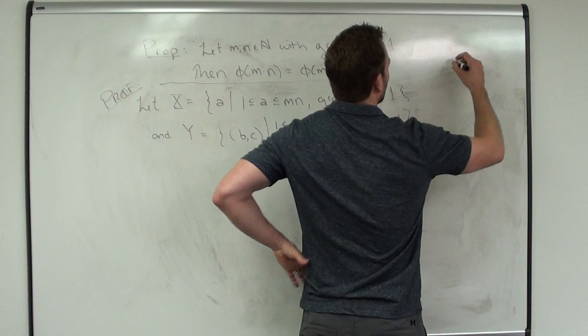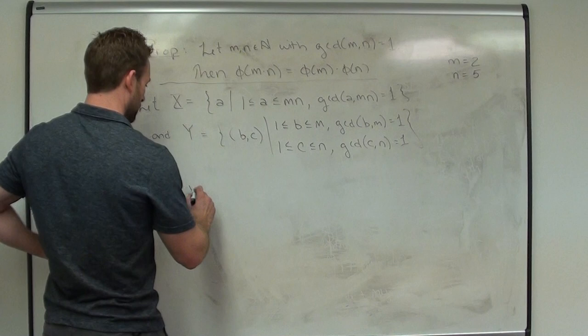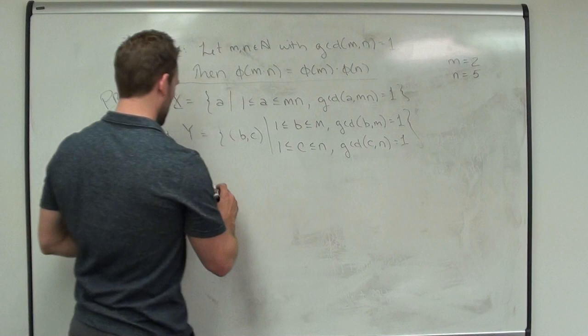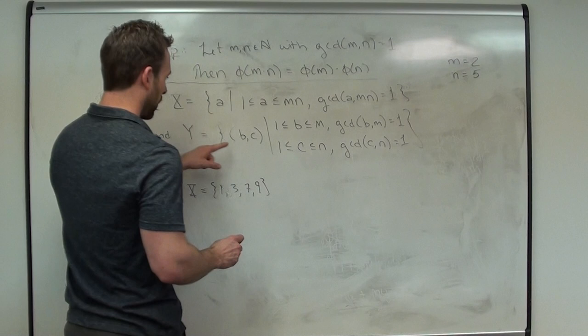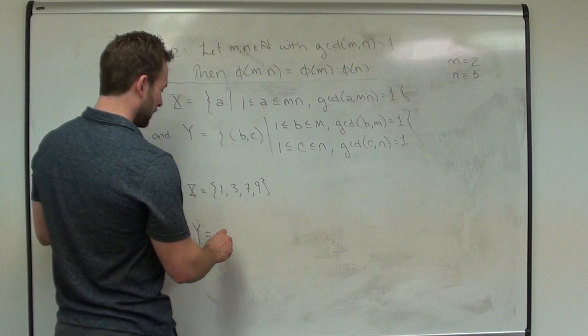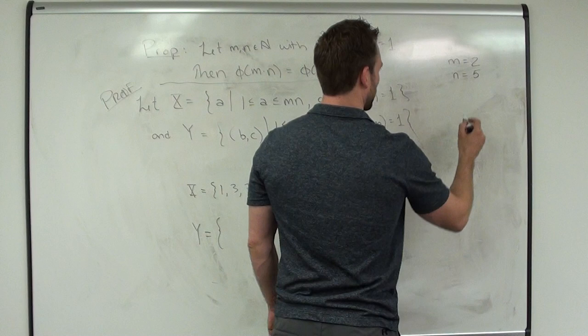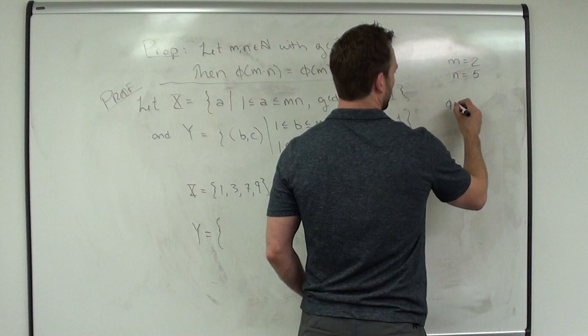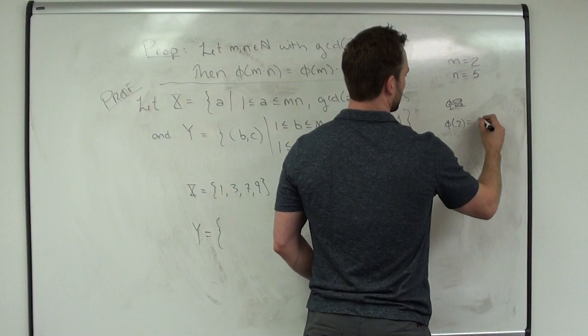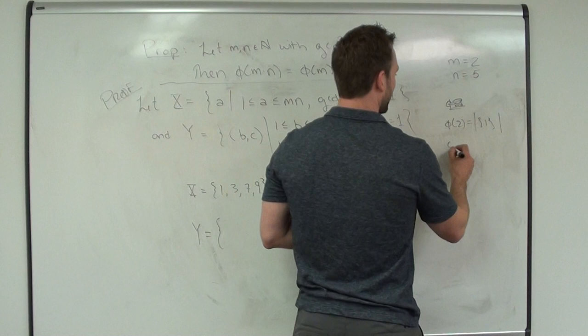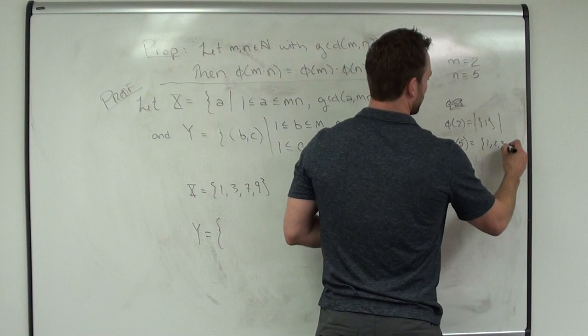Let's keep this simple with m=2 and n=5. Then X would be all guys co-prime to 2×5=10: that's {1, 3, 7, 9}. For Y, the guys co-prime to 2 is just {1}, and the guys co-prime to 5 is {1, 2, 3, 4}. So Y consists of ordered pairs, giving us: (1,1), (1,2), (1,3), (1,4).